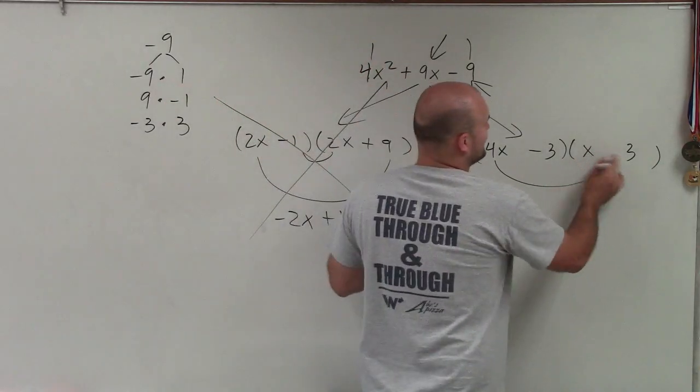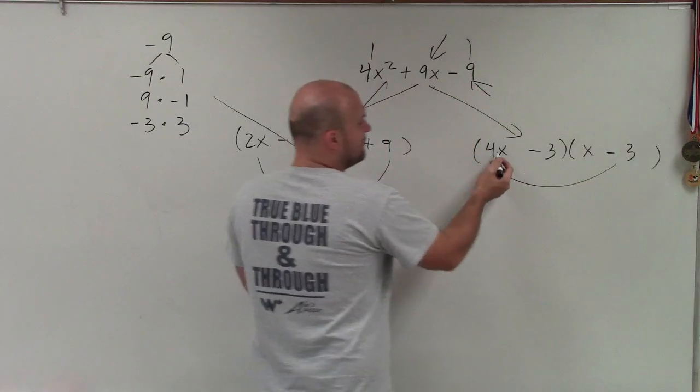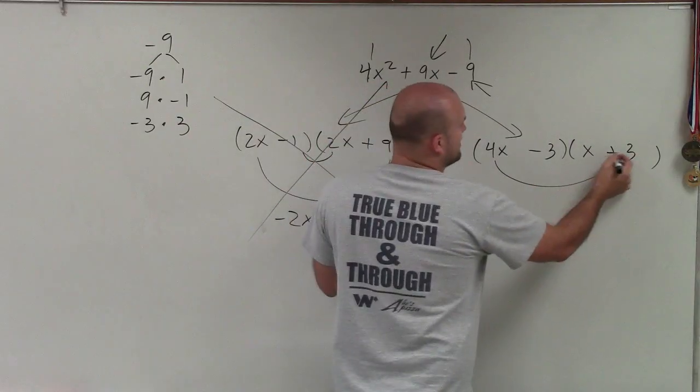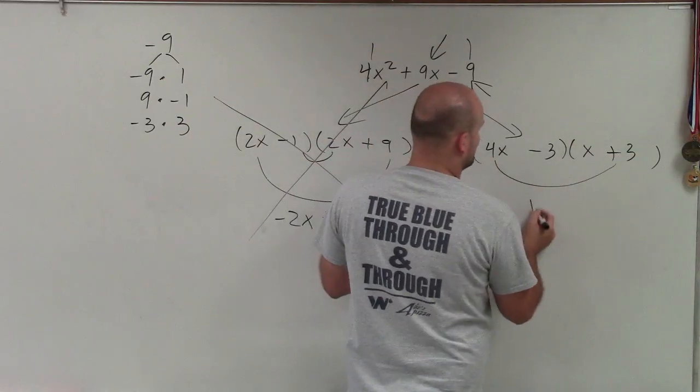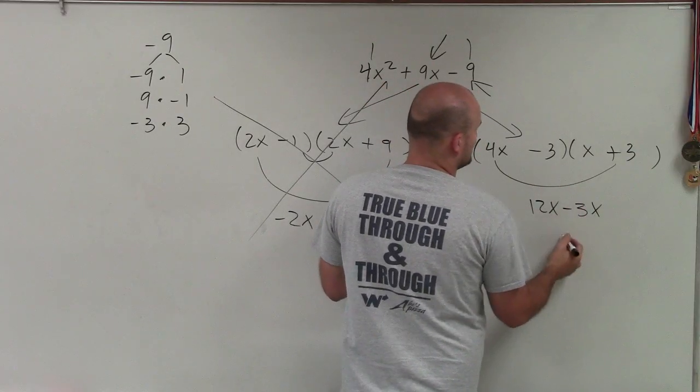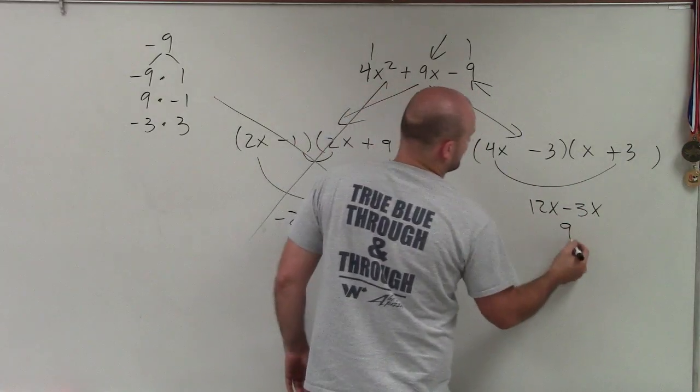I don't want to multiply it by a negative, because then 4x times negative 3 will be larger than 3 times x. So 4x times 3 is 12x. Negative 3 times x is negative 3x. And do they combine to give me a positive 9x? Yes, they do.